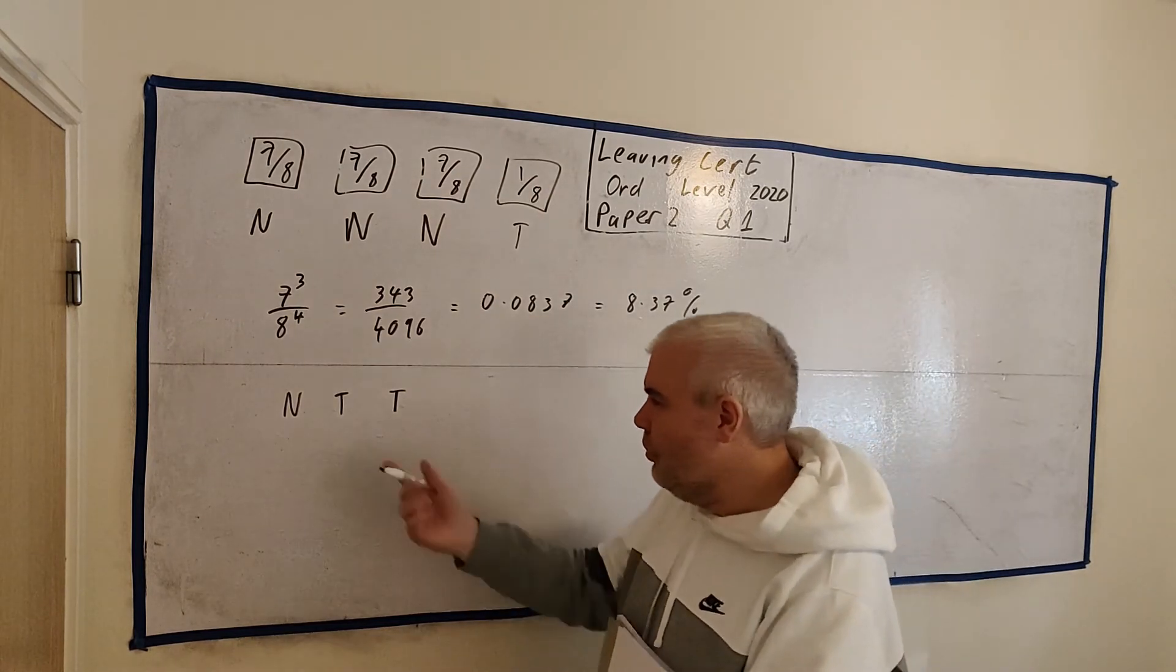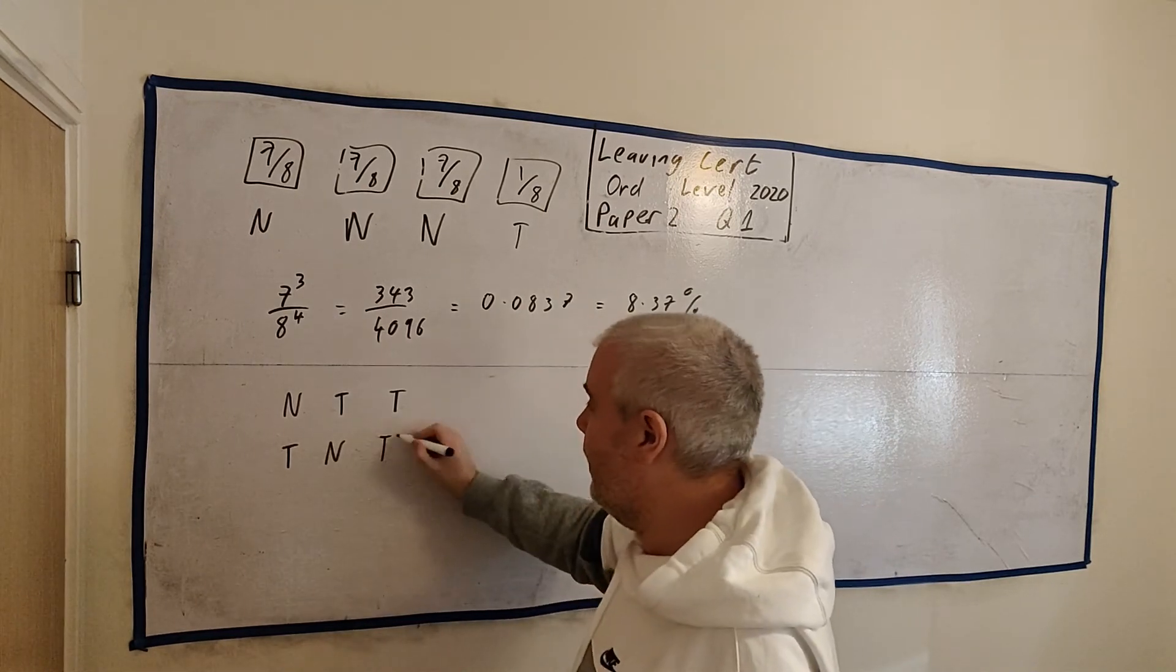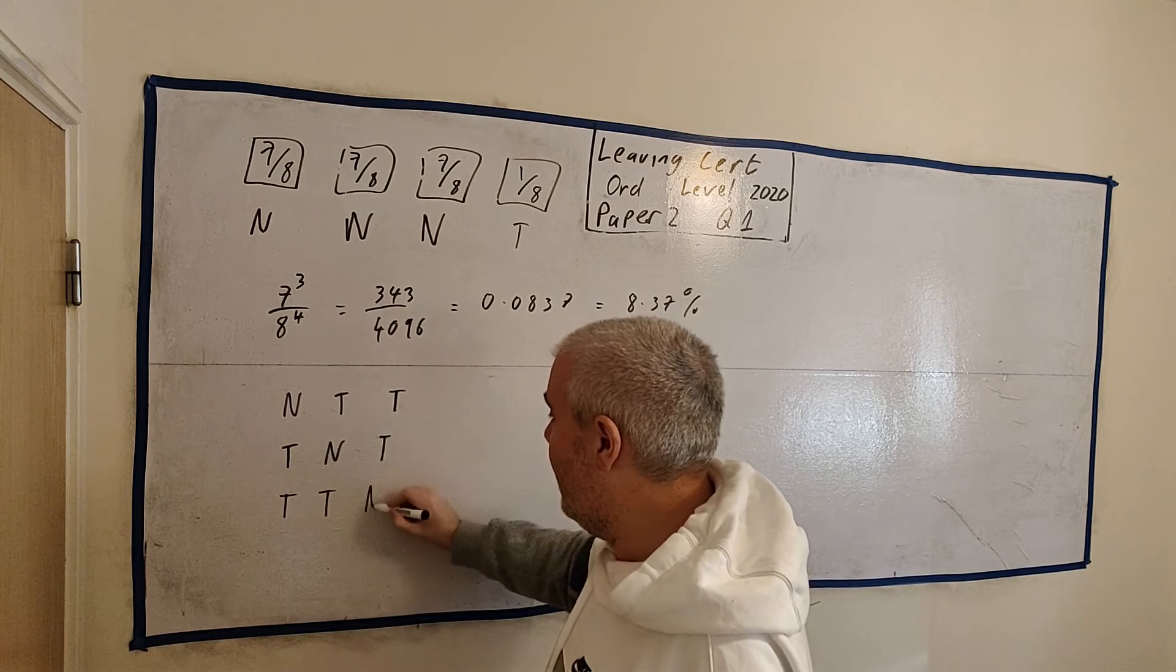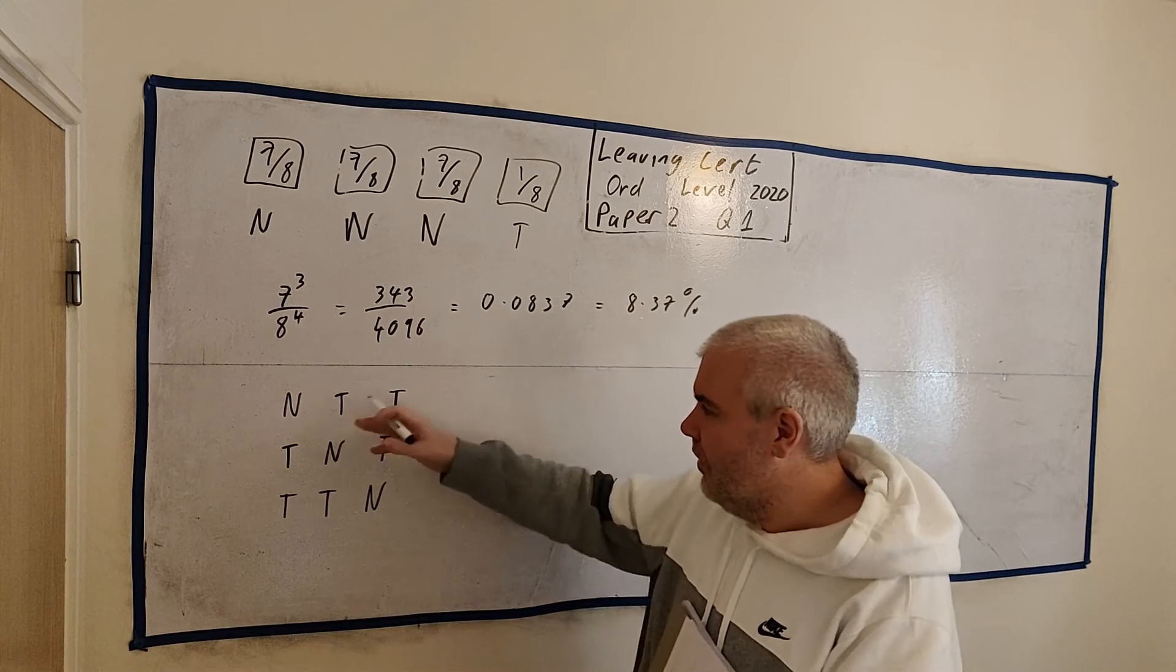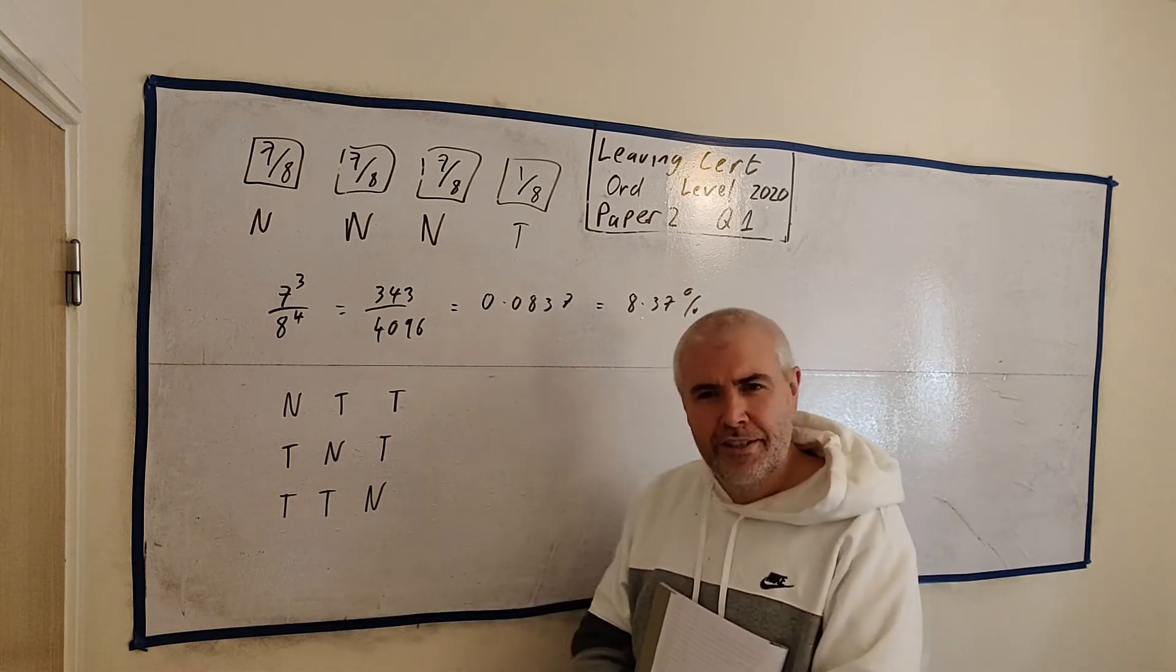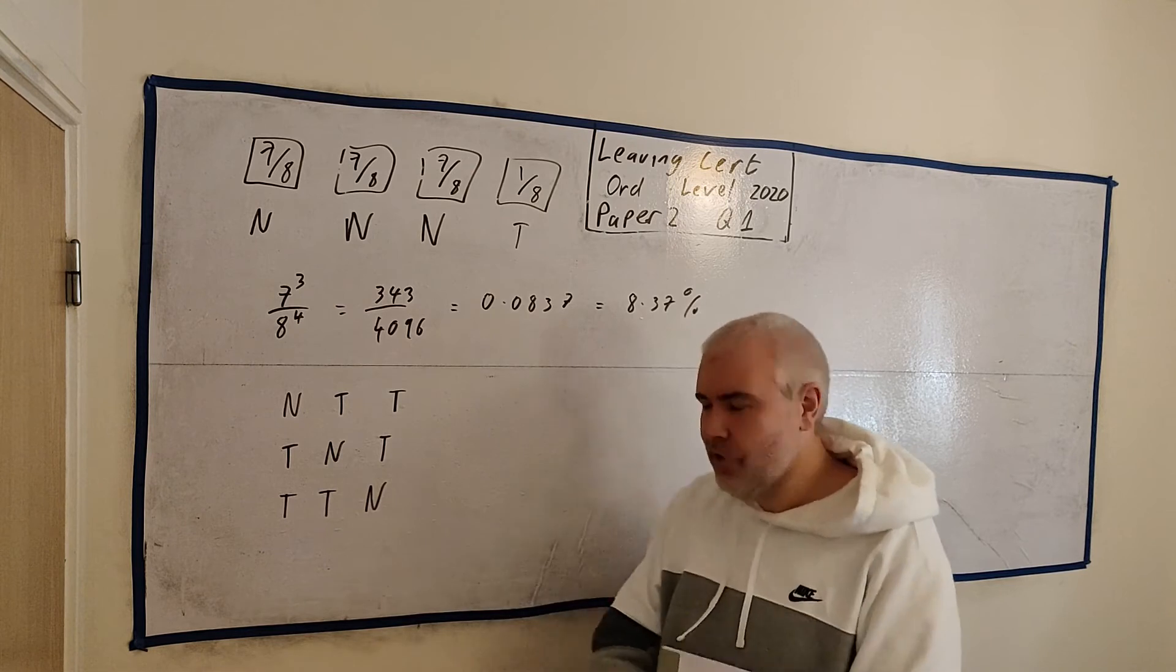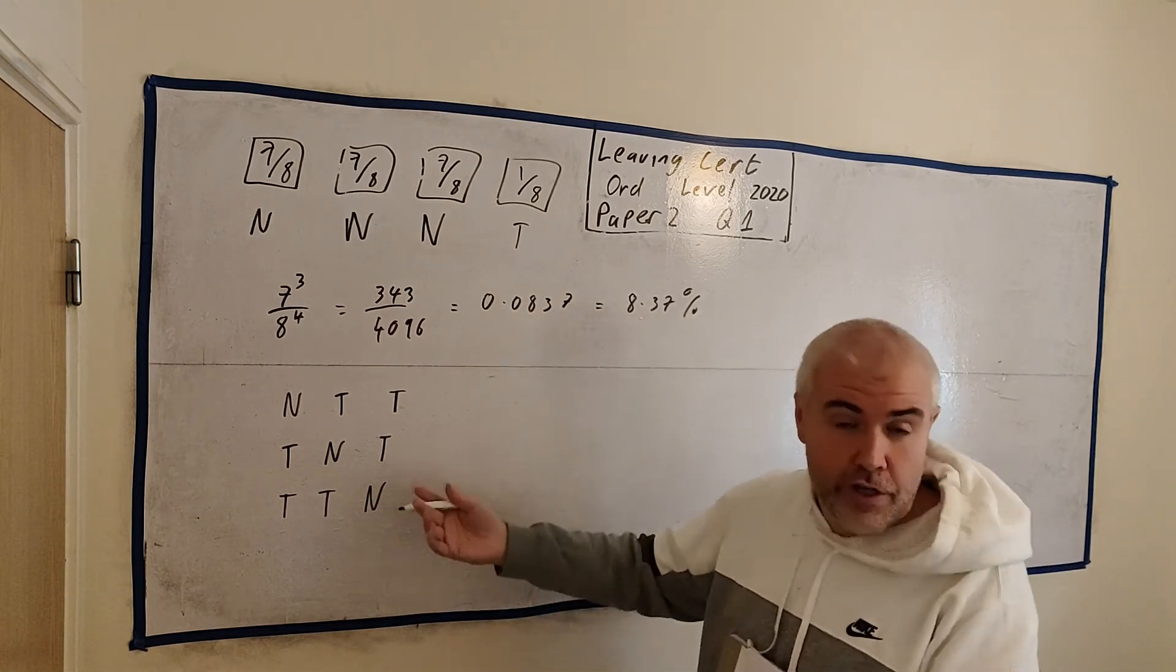And we can work out the odds of this the same way we did there. But here's the problem. There's another thing that can happen. We could have picked a tennis player, a not tennis player, and a tennis player. Or we could have picked a tennis player, a tennis player, and a not tennis player. Obviously we could have picked other things as well: not, not, not, or yes, yes, yes. But these are the only ones that have exactly 2. What's important to know is there's more than one way to get exactly 2. There's 3 ways.